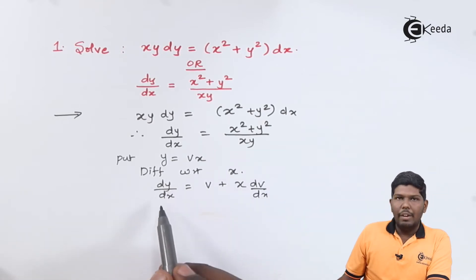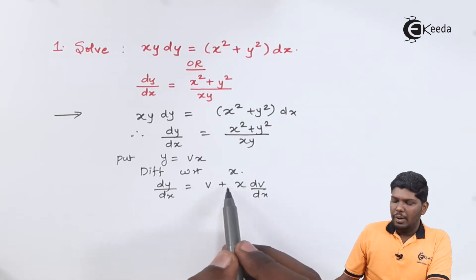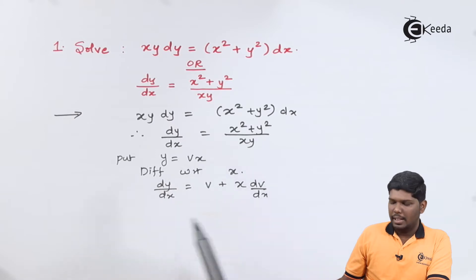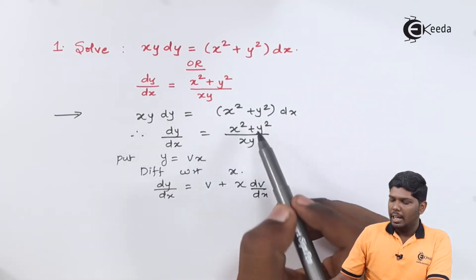That will give you dy/dx = v + x(dv/dx). After that, we are going to put y as vx and dy/dx as v + x(dv/dx) in the given equation.